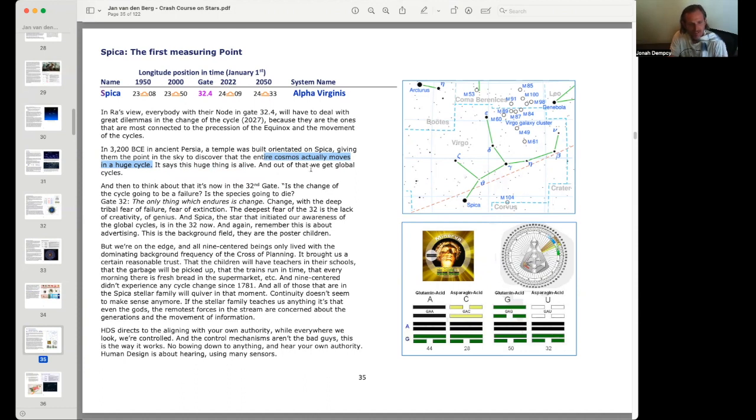This gave them the point in the sky to discover that the entire cosmos actually moves in a huge cycle. This huge thing is alive, and out of that we get global cycles. And then to think about that it's now in the 32nd gate. Is the change of the cycle going to be a failure? Gate 32 is the fear of failure. Is the species going to die? The only thing which endures is change—change with the deep tribal fear of failure, the fear of extinction.